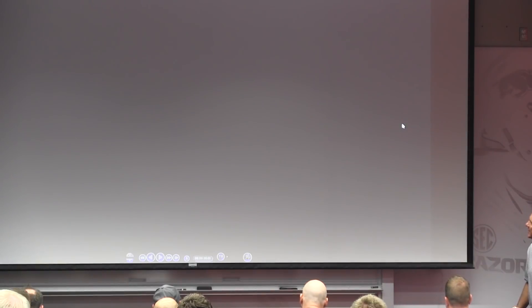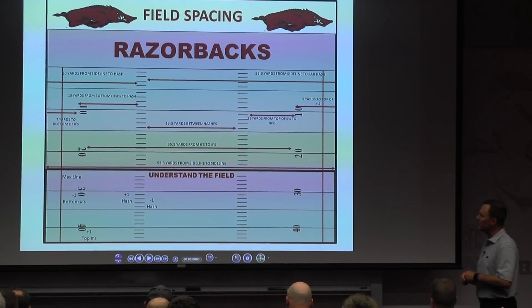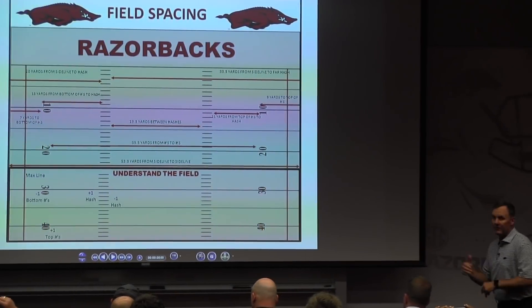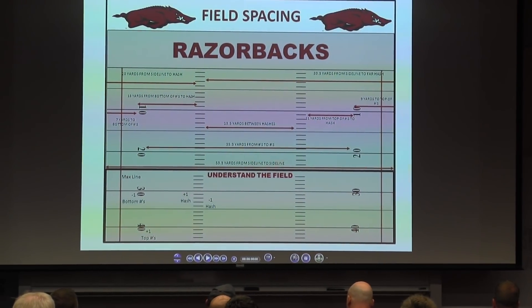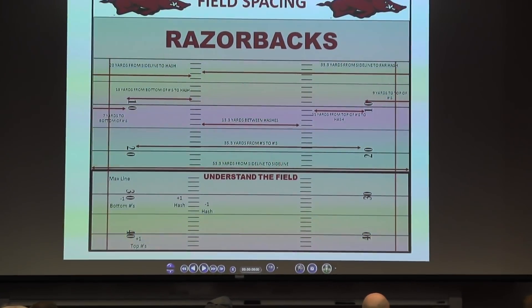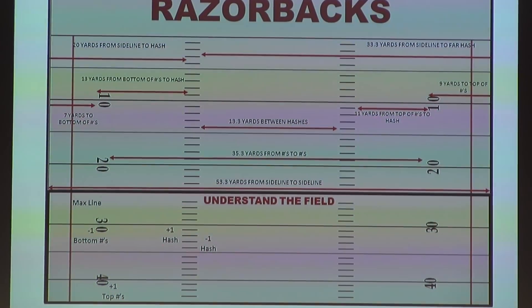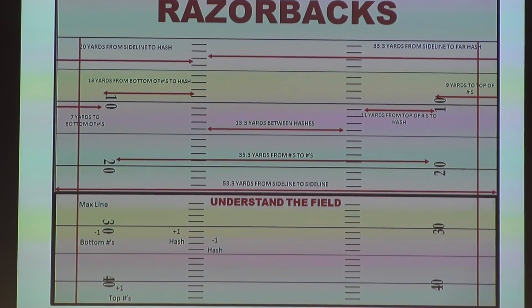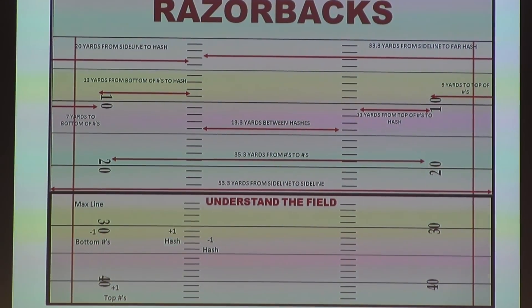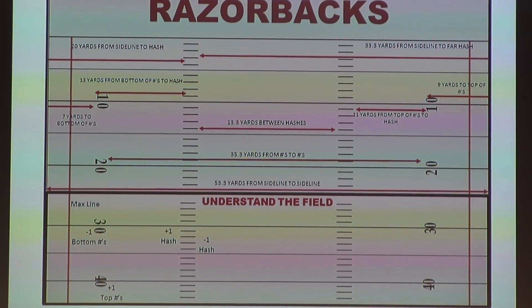So here we go — just basic terminology, teaching our recruits and players. The first thing we start with: it's like John Wooden said, the first thing he had to teach a young man was how to tie his shoes. Why? Because if he tripped over his shoestrings, there's no way he can get down the floor and make a layup.